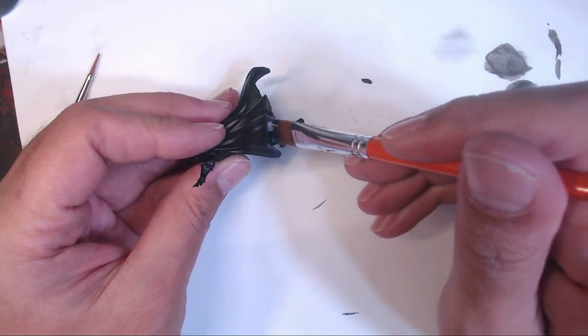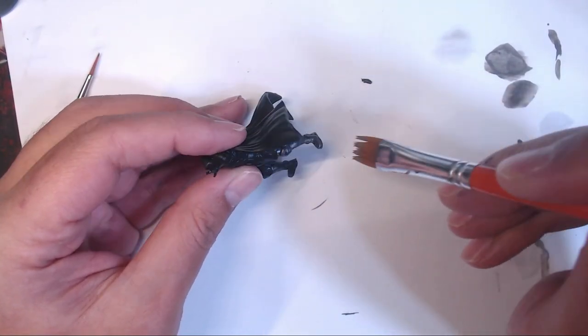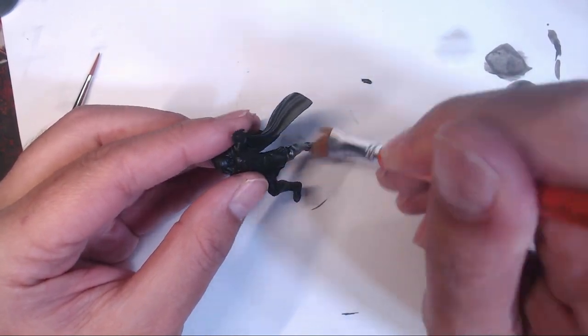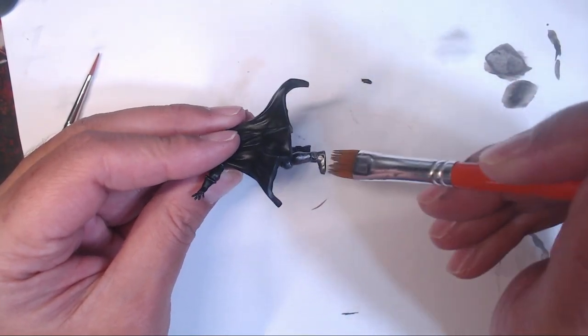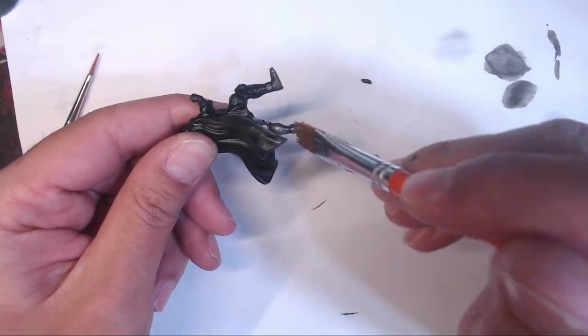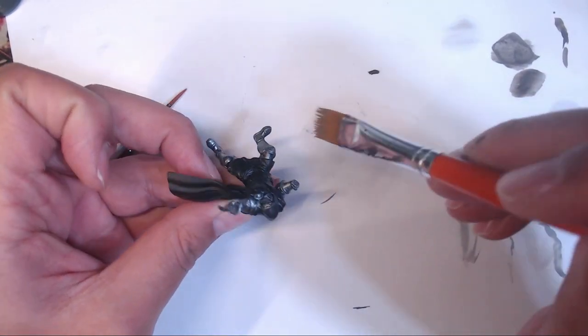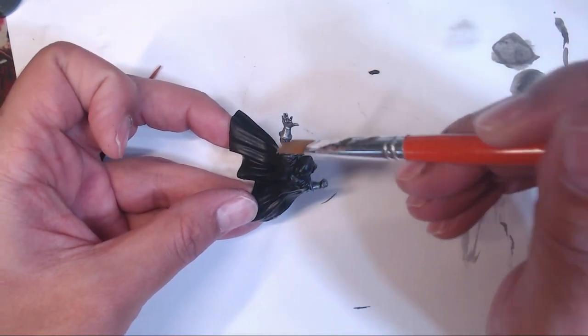Working inside out, I started with an overbrush of Army Painter Shiny Silver. I like doing an overbrush when doing metallics, as the black showing through really sells the look of a raw metal for me, like pig iron. And it saves a ton of time over trying to pull off a non-metal metallic, or NMM.